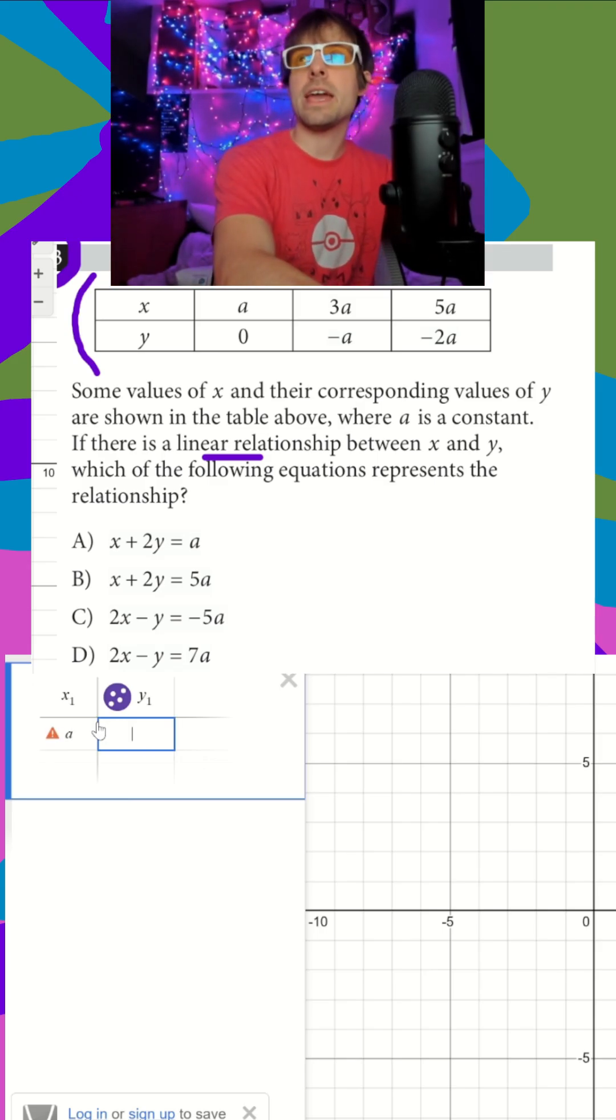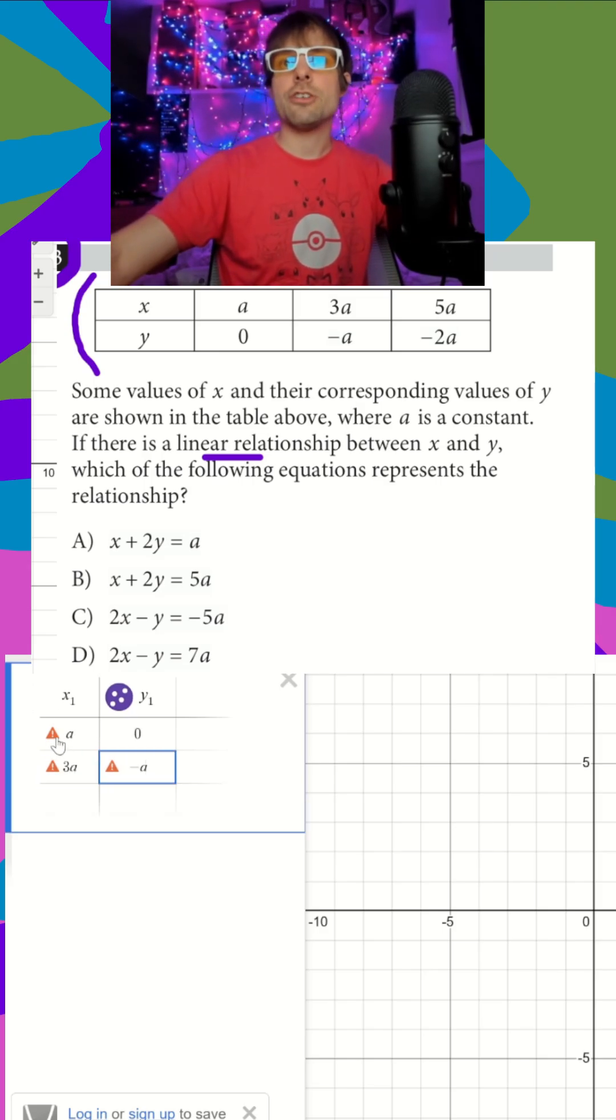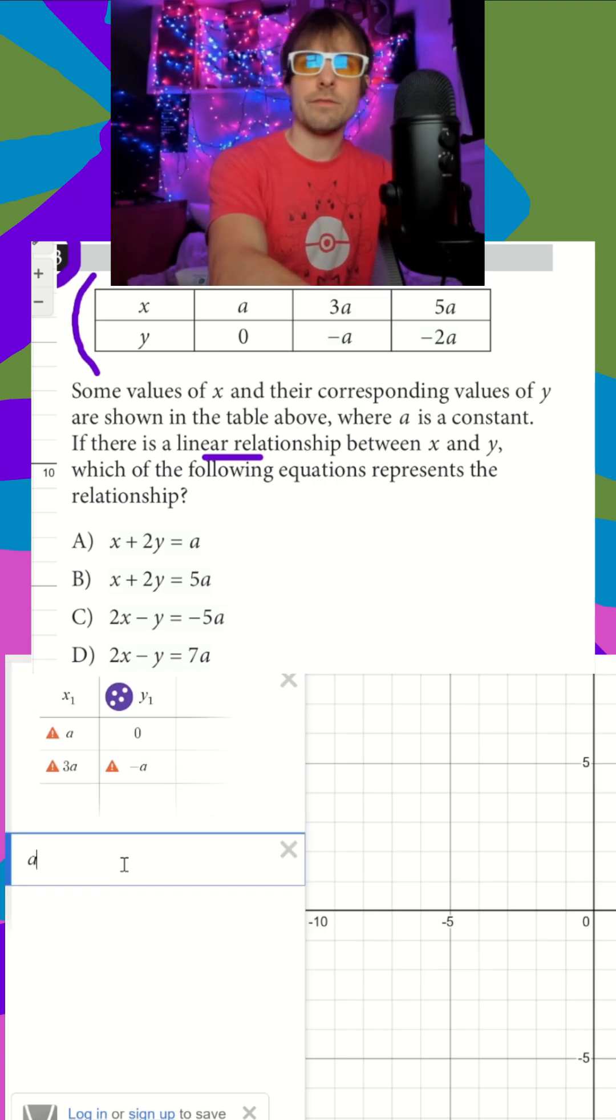So we only need two points here. I see a and zero, and I see three a and I see negative a for my y. And you're going to see these, that's just because there's a letter. So if you ever have a letter in your chart, you're just going to have to define a for Desmos.